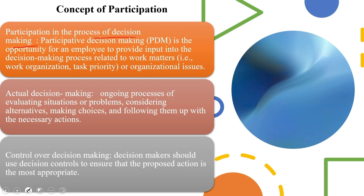Now let's look into actual decision making. Decision making and problem solving are ongoing processes of evaluating situations or problems. We look into the alternatives, consider those alternatives, make choices based on the alternatives, and follow them up with necessary actions. This is exactly what you mean by the actual decision making process.